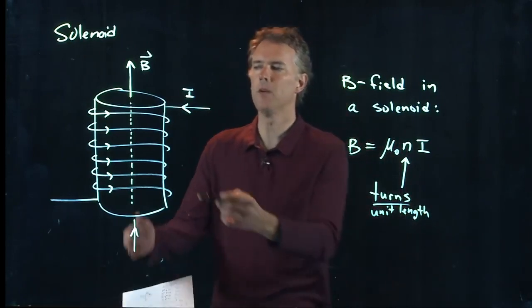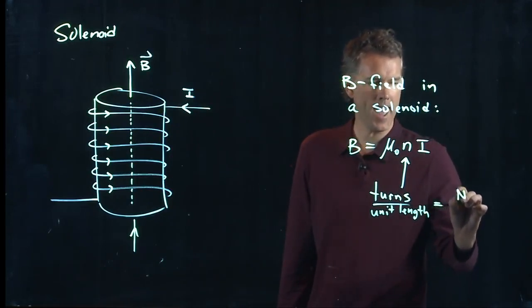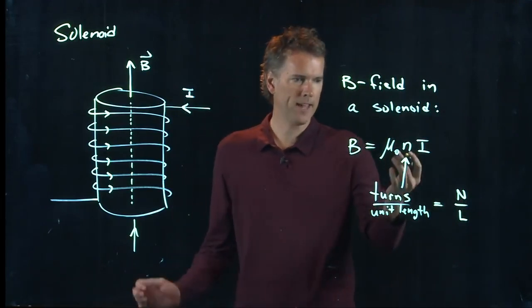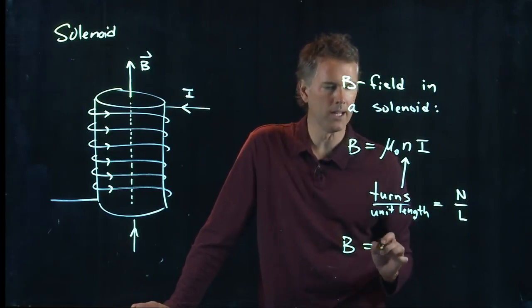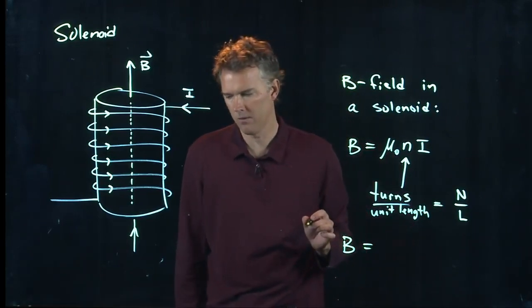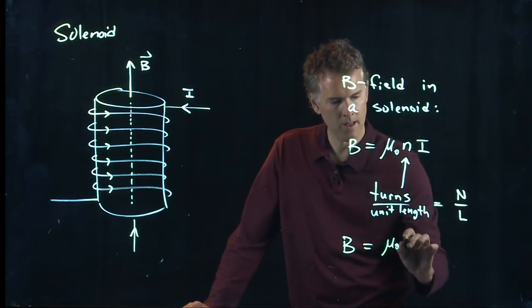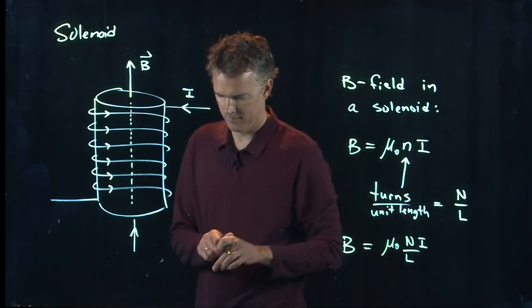Okay, how many wires do you have? N wires. How long is your solenoid? L. That's what this little n is - turns per unit length. Okay, so what is the strength then of the B field? It is μ₀I over L.